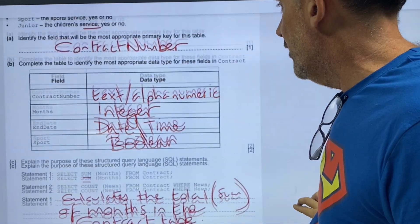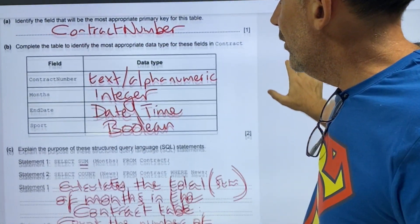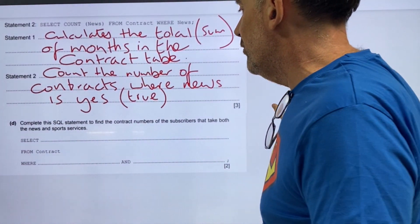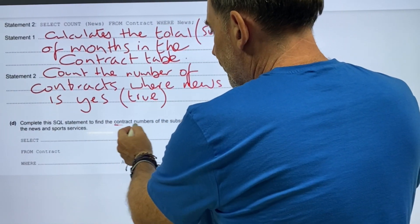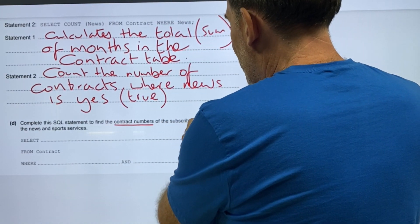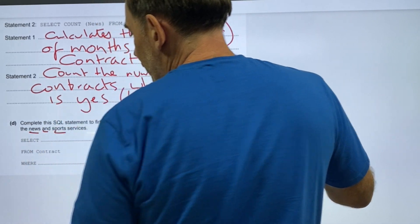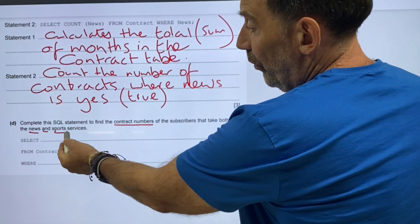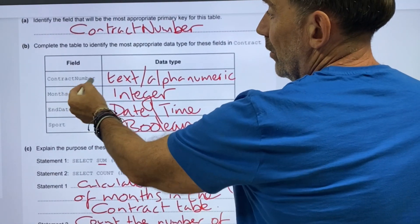So that should get us, news, yes or no, boolean. Contract number. And then, finally, complete the SQL statement to find the contract numbers of the subscribers that take both news and sports services. So we've got contract numbers. That is one here, look. Contract number.